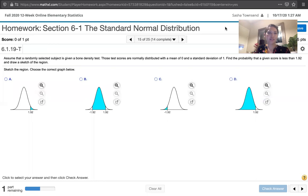The problem asks us to assume that a randomly selected subject is given a bone density test. Those test scores are normally distributed with a mean of 0 and a standard deviation of 1. Find the probability that a given score is less than 1.92 and draw a sketch of the region.